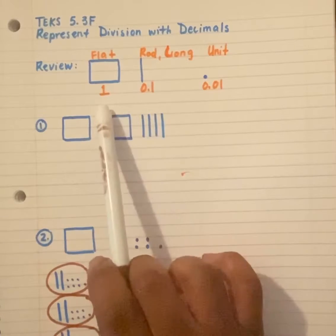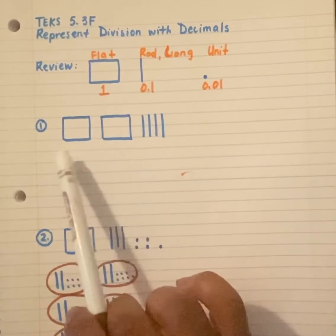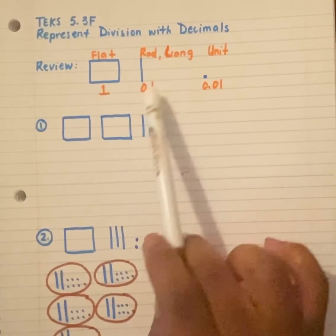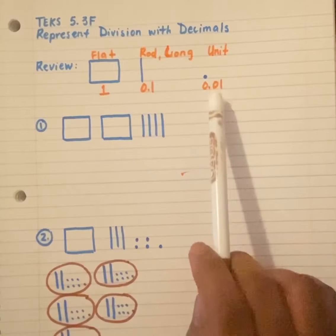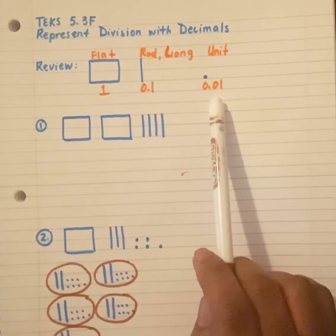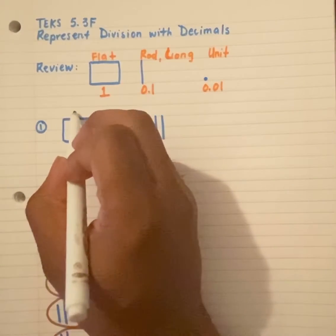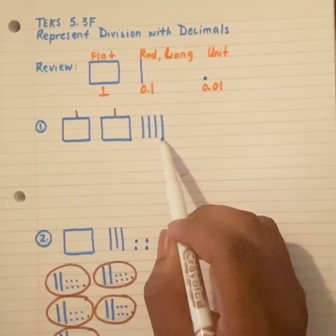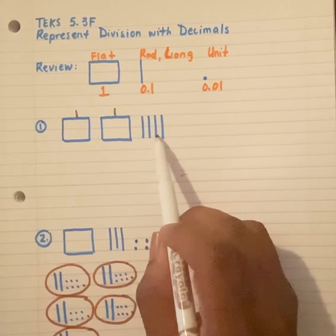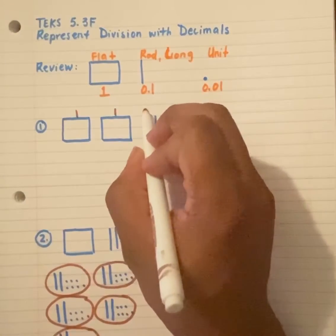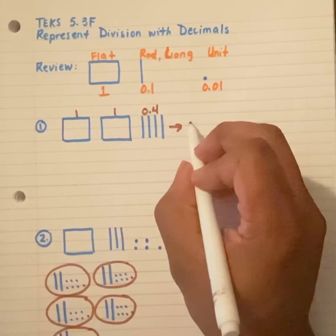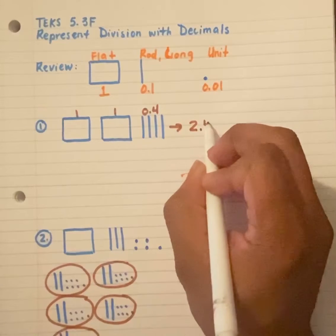So based on what we just reviewed, let's talk about what number this is. Remember, a flat is one whole, a rod or a long is a tenth, and then a unit is hundredths or one penny. Well, this is one whole, this is another one whole, and this is considered four dimes. So one, two, three, four, that's zero and four-tenths. That means this picture represents two and four-tenths.